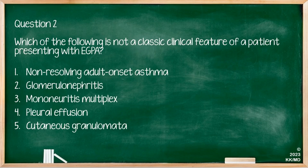Which of the following is not a classic clinical feature of eGPA? Options are non-resolving adult-onset asthma, glomerulonephritis, mononeuritis multiplex, pleural effusion, and cutaneous granulomata. While eGPA can present in many ways, the least likely feature is pleural effusion. The other four — asthma, glomerulonephritis, mononeuritis multiplex, and cutaneous granulomata — are classic signs of this condition.